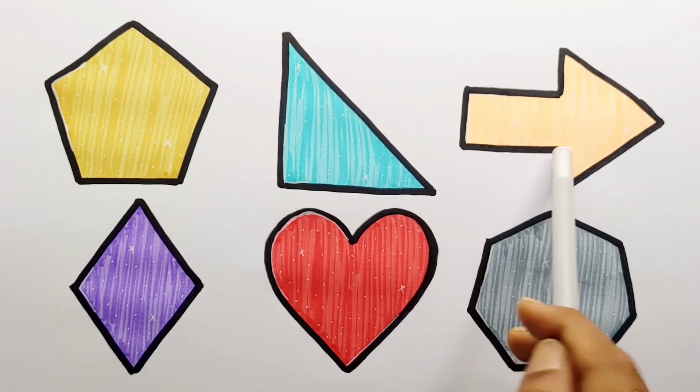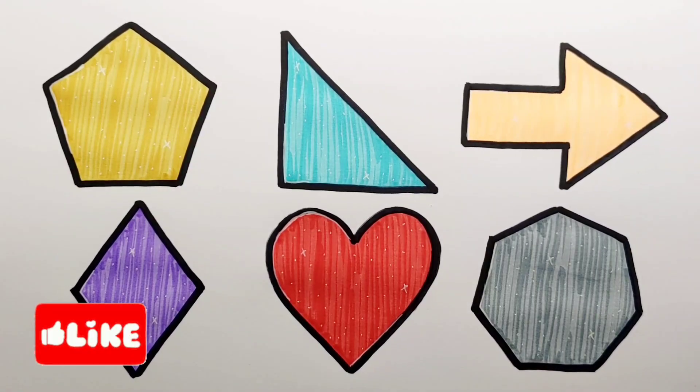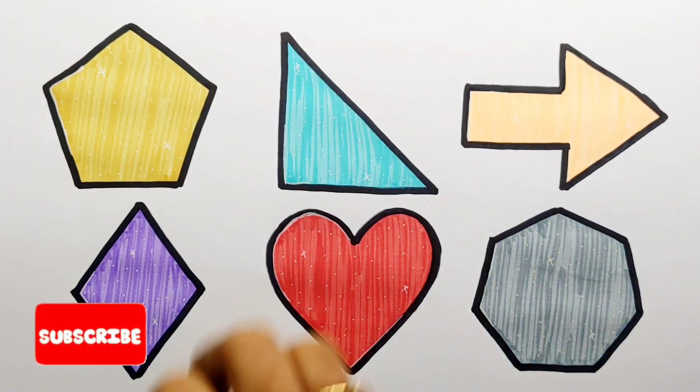Red color, right angle triangle, arrow, rhombus, heart, heptagon. Thank you so much for watching! Don't forget to like and subscribe. See you in the next video. Bye bye!